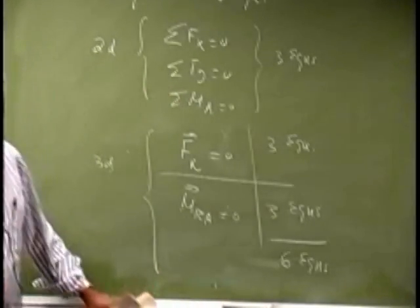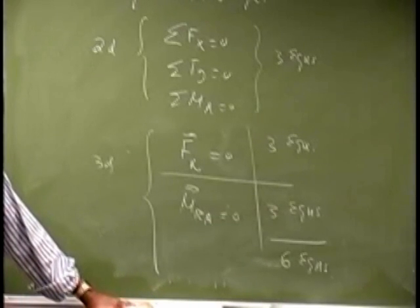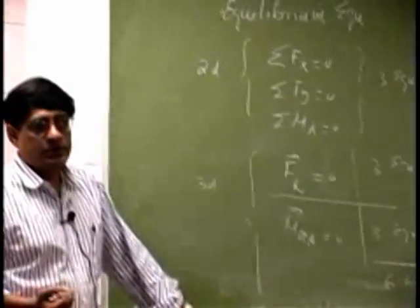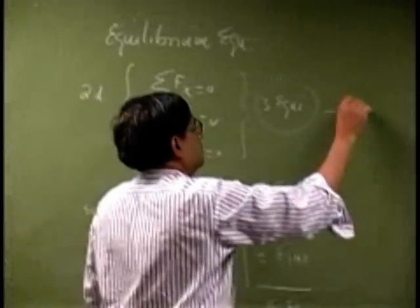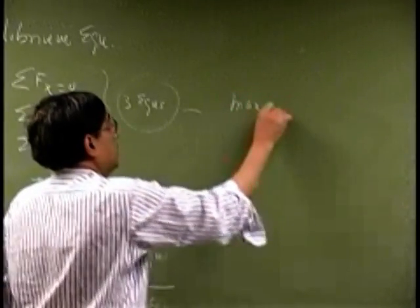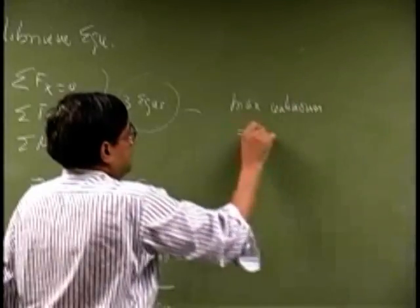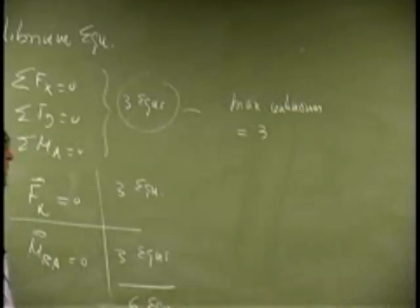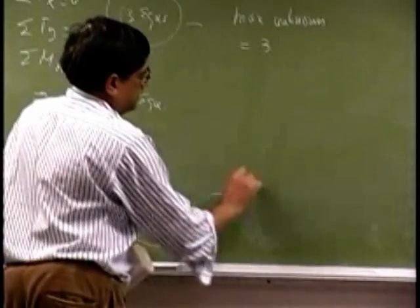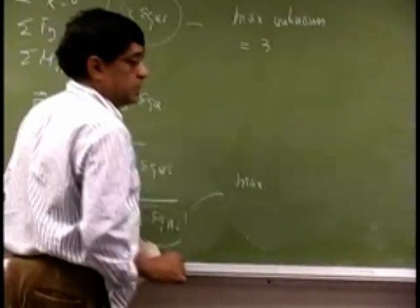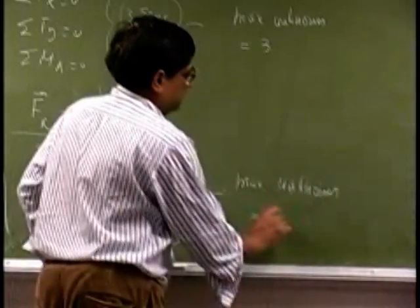Now from math, you know that the number of unknowns you can solve in a given problem equals the number of equations. So if you have three equations, then the max unknowns you can handle would be three. Same thing here - if you have six equations, then your maximum unknowns you can handle would be six.